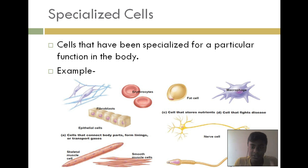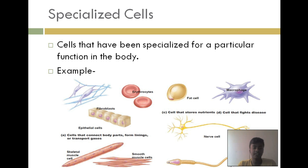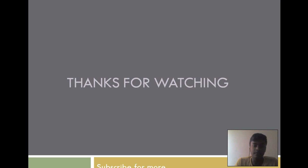Now let's look at specialized cells. These are cells that have been specialized for a particular function in the body, unlike the unspecialized cells shown earlier. Examples include erythrocytes — red blood cells — nerve cells, and sperm cells.